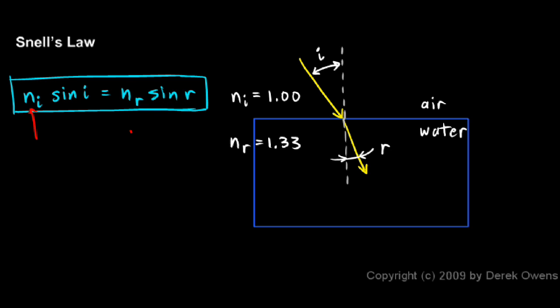And these Ns are the indices of refraction for the two different materials. NI is the index of refraction of the material where the incident ray is, and NR is the index of refraction for the material where the refracted ray is.